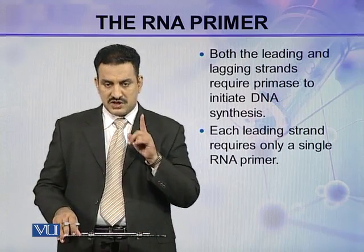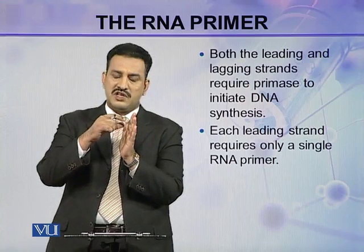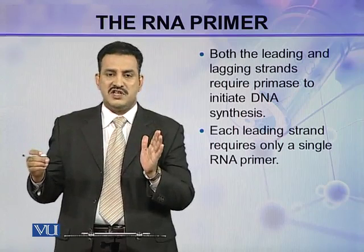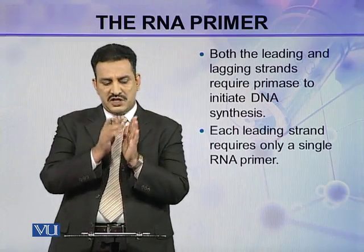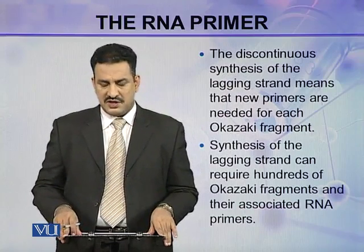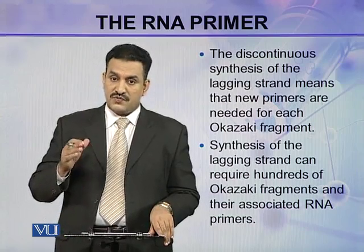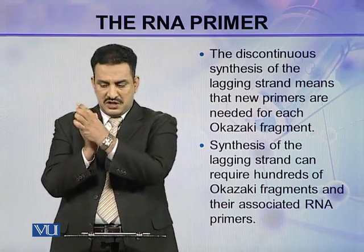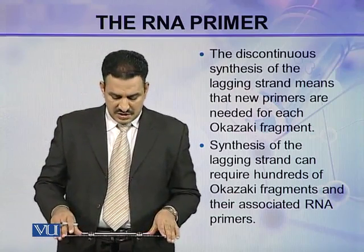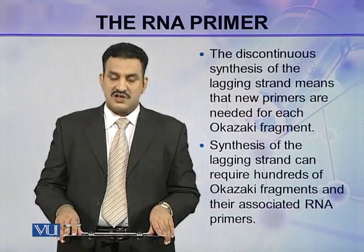The leading strand requires only a single RNA primer. As you know, once synthesis of the leading strand is started, it continues until the replication fork reaches the end of the DNA molecule, so only one RNA primer is needed. On the lagging strand, discontinuous synthesis takes place, meaning new primers are needed for each Okazaki fragment. Synthesis of the lagging strand can require hundreds of Okazaki fragments, and therefore hundreds of associated RNA primers.